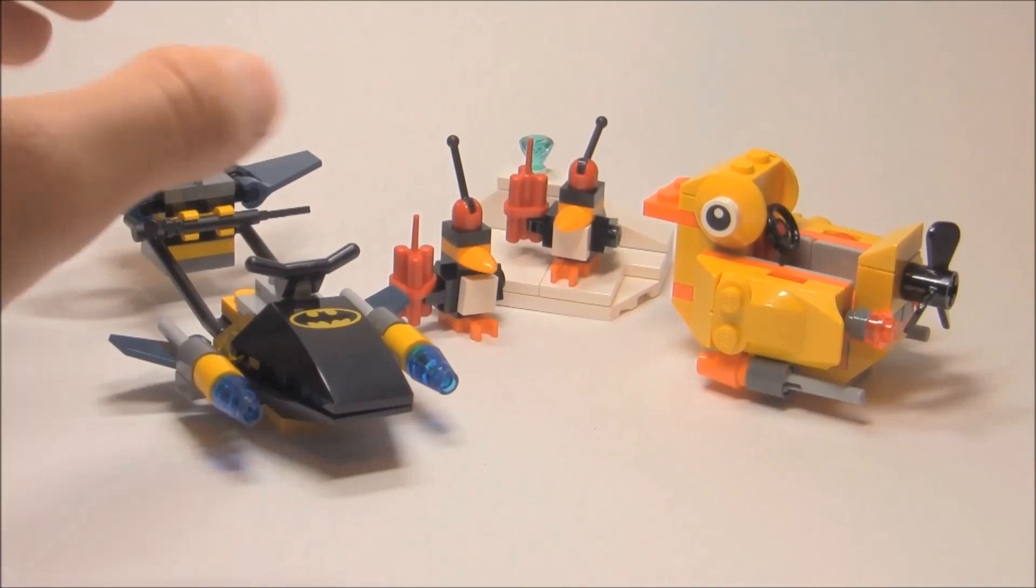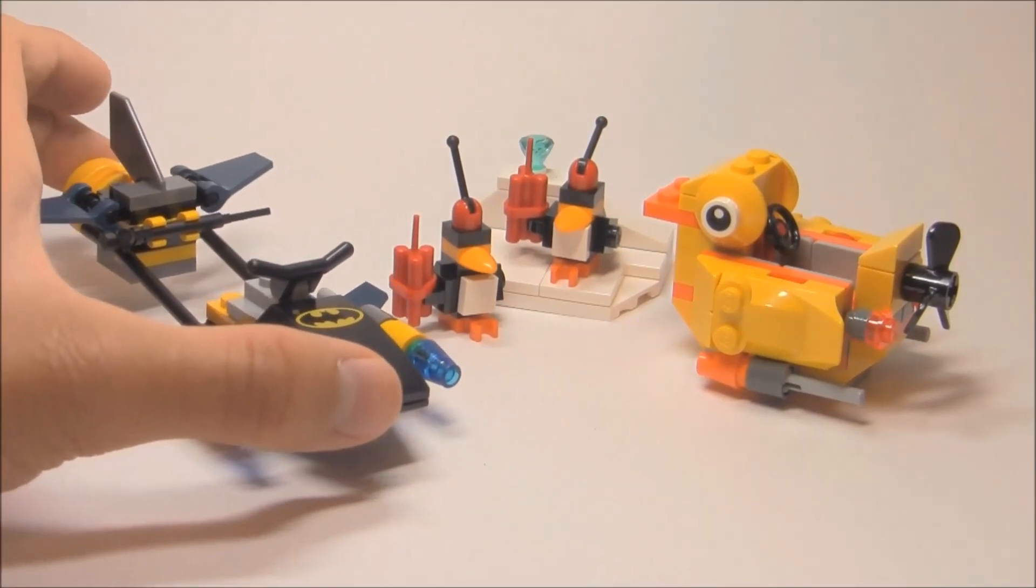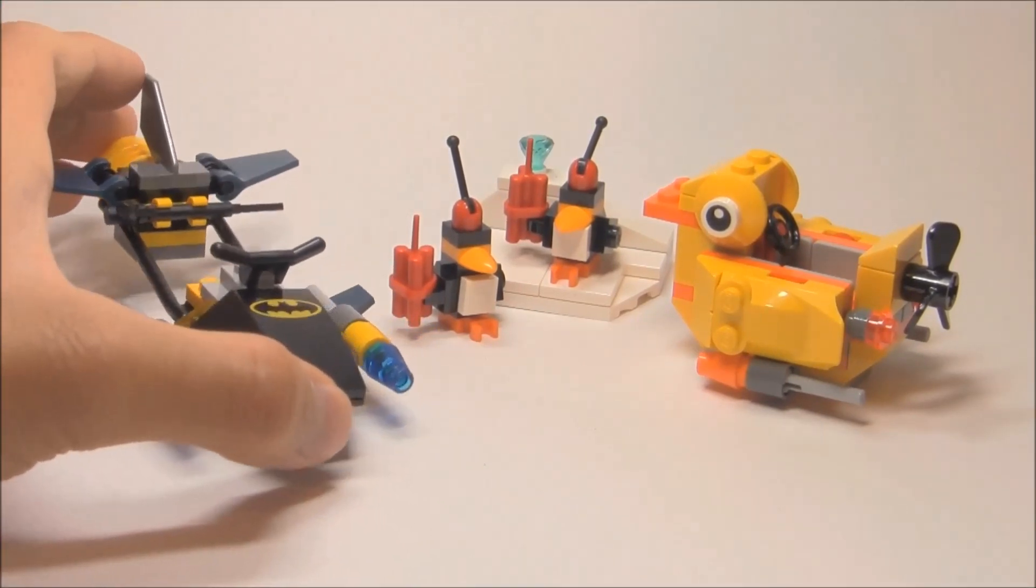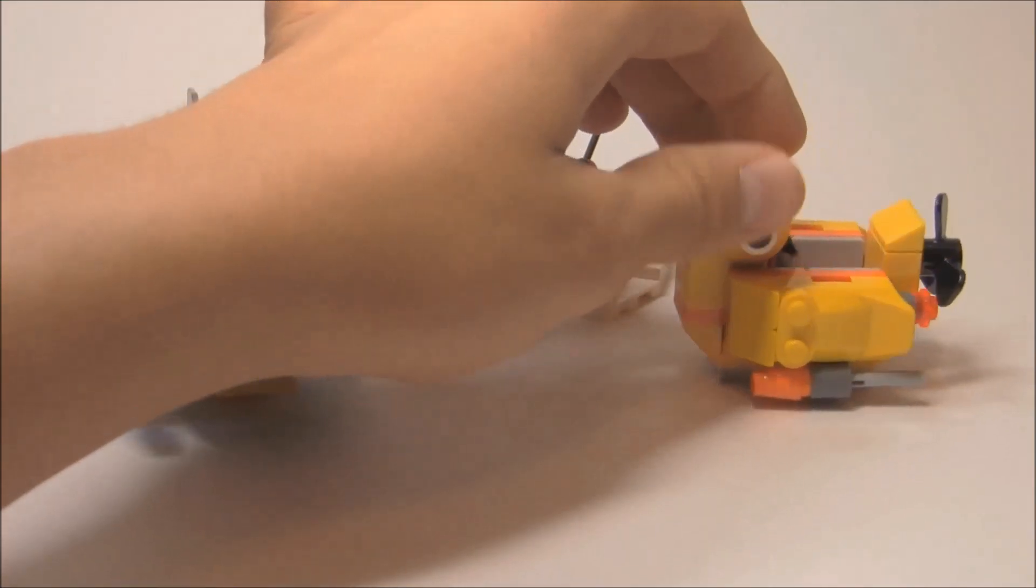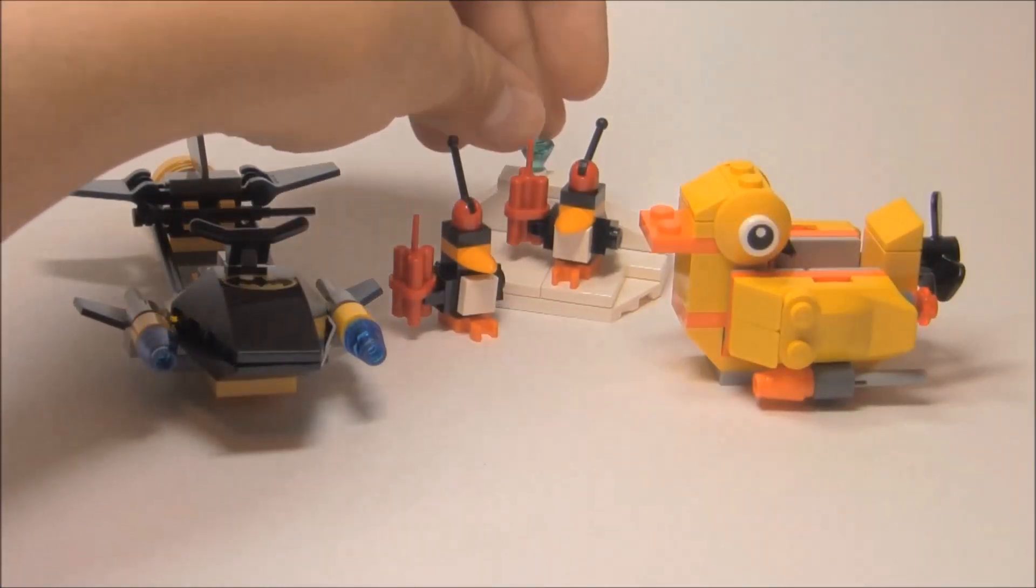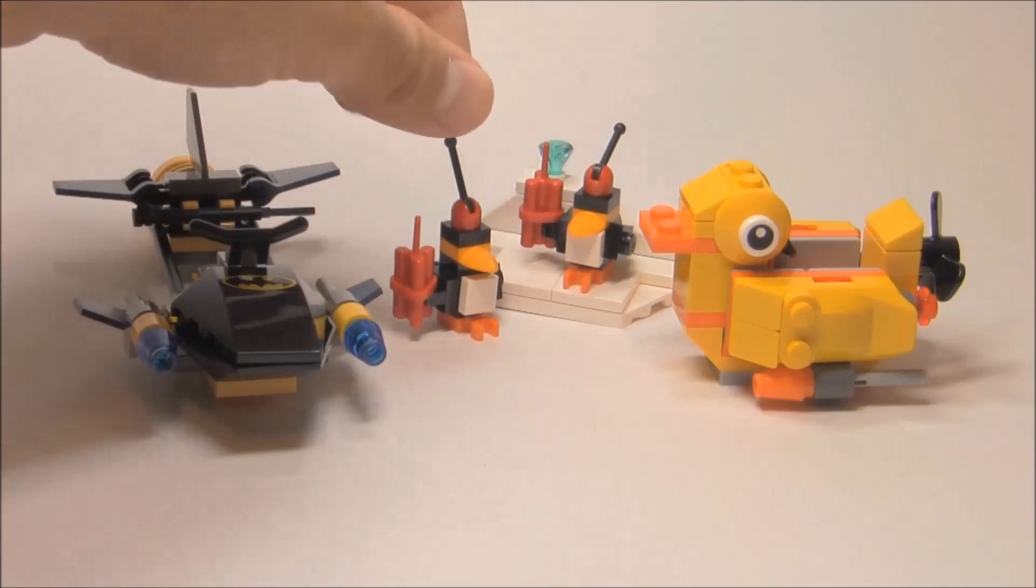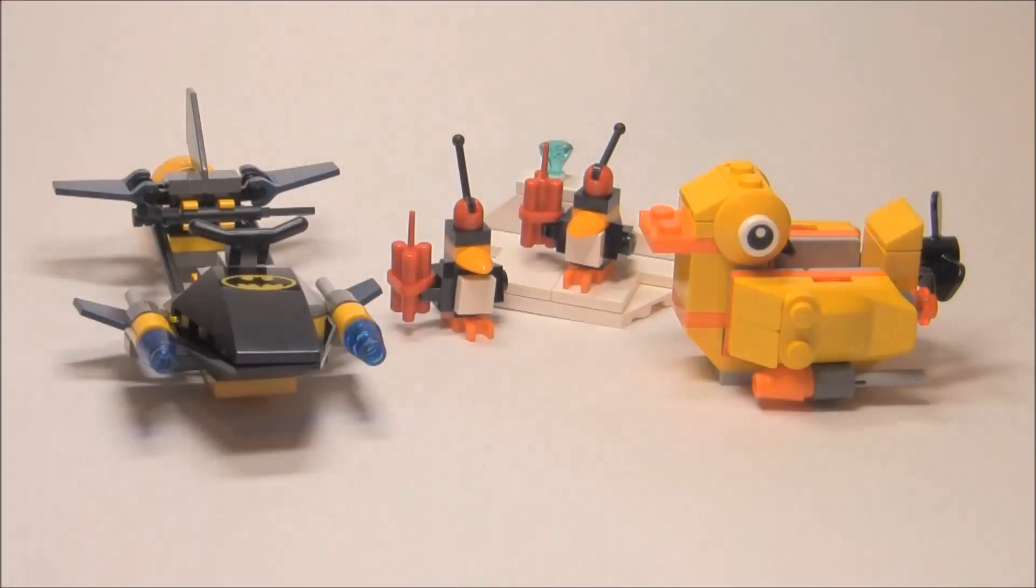Here's what you get with this set. You get a lot of stuff for this $13 price point: this little bat scuba jet, this penguin duck vehicle, this part for the arctic crystal, and these two little mechanized penguins.